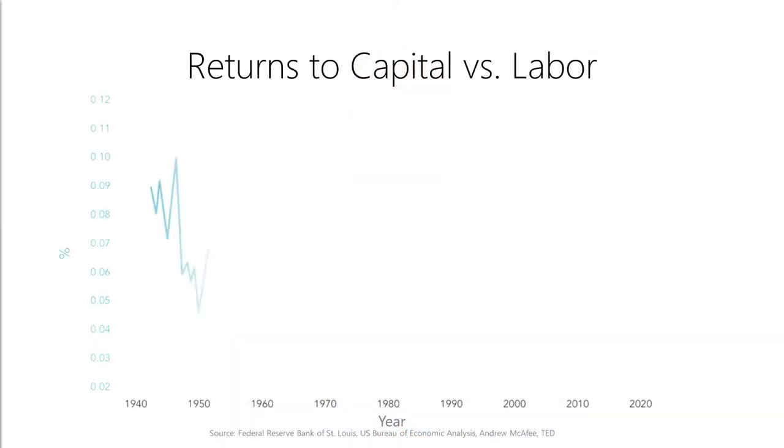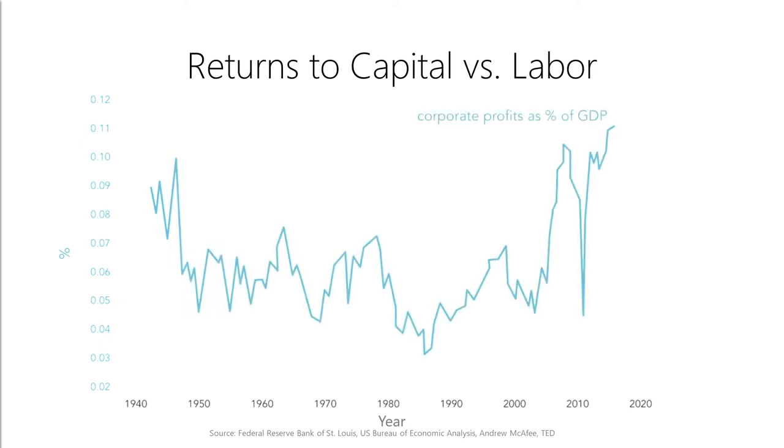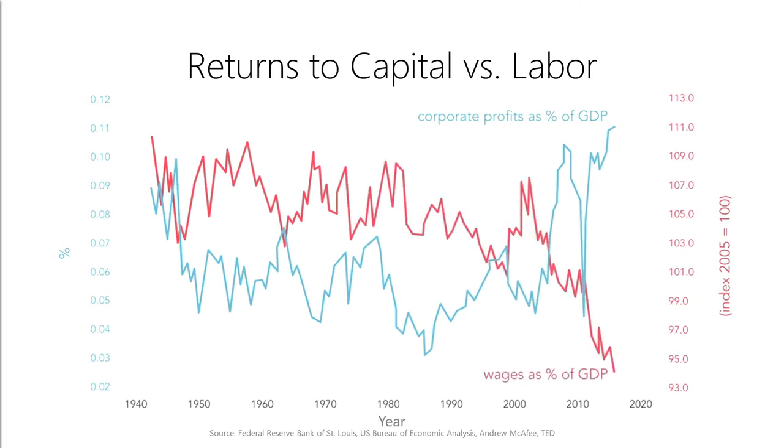Over the past few decades, we have seen a continuous upward trend in returns to capital. As a result, the value you receive from investing in capital assets continues to increase. On the other hand, we have seen a continuous decrease in returns to labor. As a result, the value that you receive from each hour of your labor continues to decrease. Essentially, labor is becoming cheap and automation is becoming highly profitable.